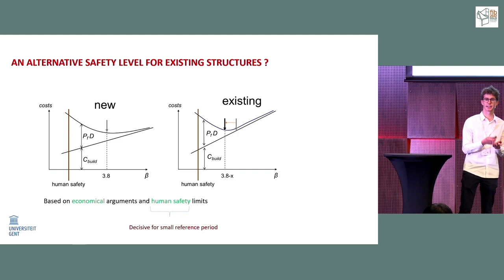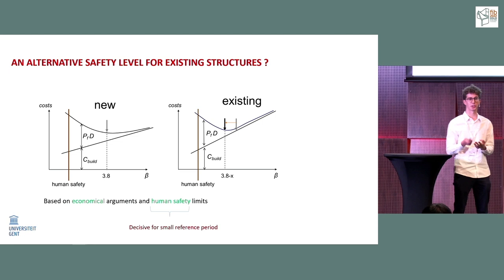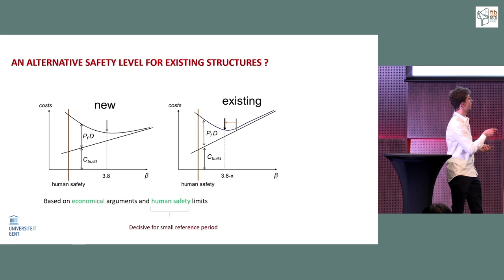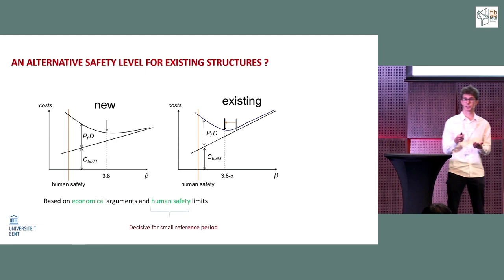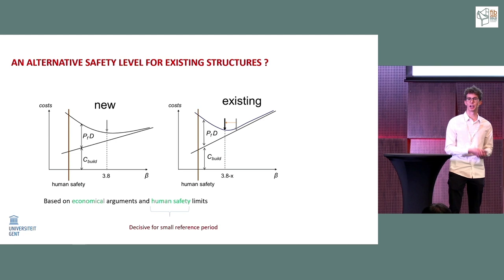When we move to the assessment of an existing structure, something changes — the cost of structural intervention or strengthening is generally higher than for new structures. This shifts the cost curve to the left, and the minimum shifts left as well, meaning the optimal safety level changes and the beta value will be lower than the classical 3.8. There is also a minimum for human safety, but in most cases this is not critical.